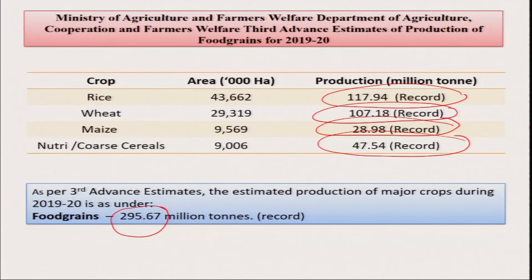When pulse production and cereal production are combined, they are called food grain production. When India got independence, around 1950, our total food grain production was only 50 million tons, with a population of around 33–40 crore. Nowadays, our food grain production is 300 million tons — a 6-fold increase. So we can provide enough food for our population, and there is also great potential for exporting organic rice, especially basmati rice and scented varieties like Gobindobhog, Joha rice from Assam, and black rice or Chakhao from Manipur — all very valuable high-value products.